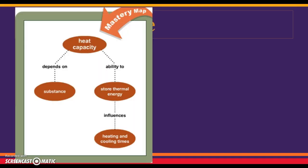Heat capacity depends on the substance. It is the ability to store thermal energy, and it influences how much time it takes an object to heat up or to release that heat. The releasing of heat we call cooling off.